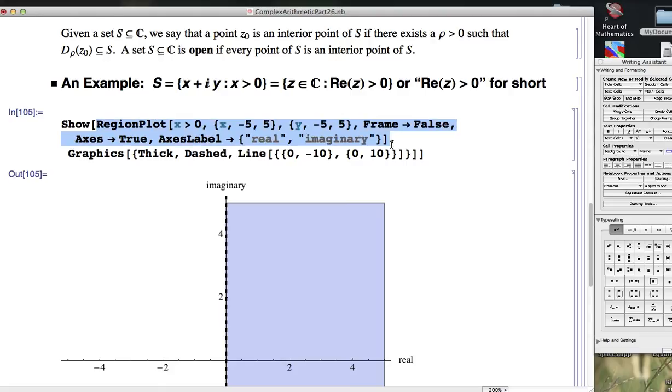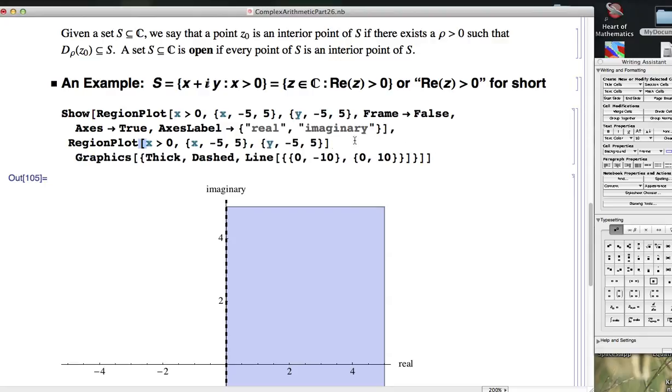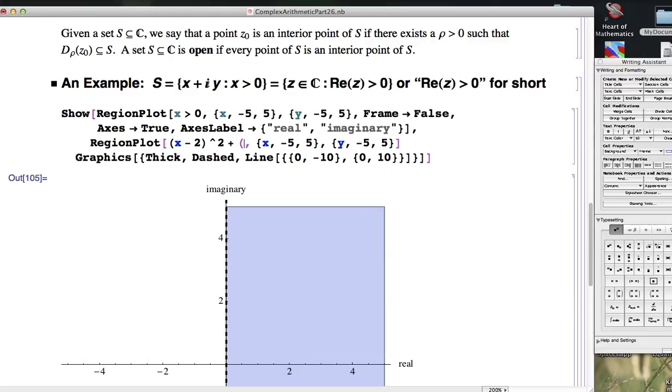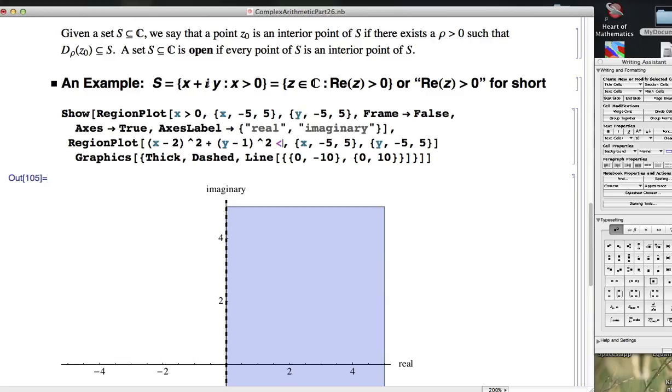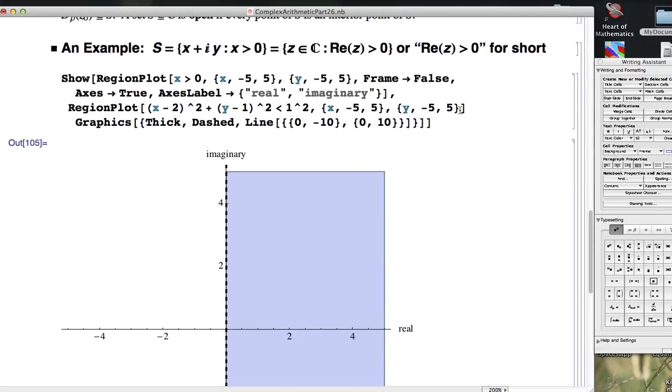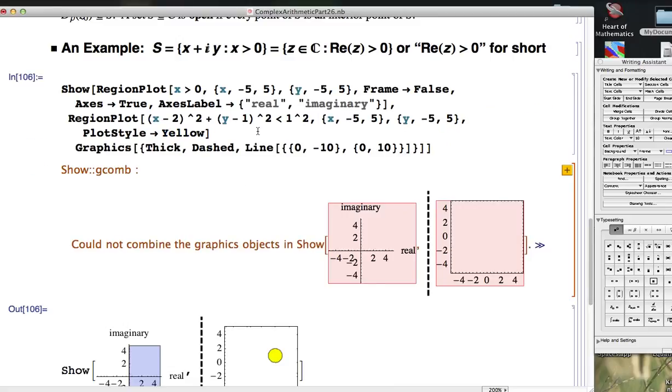let's just copy and paste region plot here to save some time, although I don't need those other options, actually. A disk of radius, well, if our point is, say, the point 2 plus i, we're 2 units away from the imaginary axis, as long as our radius is less than 2, actually even equal to 2, it will work, we'll get a disk that will be inside the right half plane. Let's make this yellow. I need a comma there. There we go.